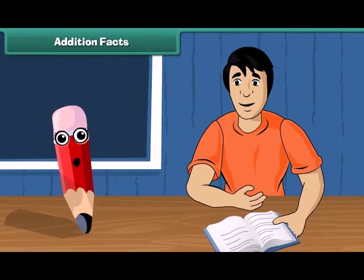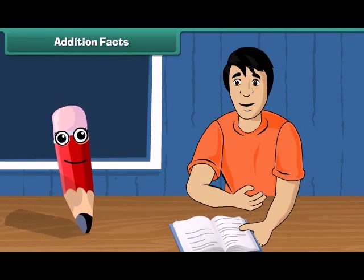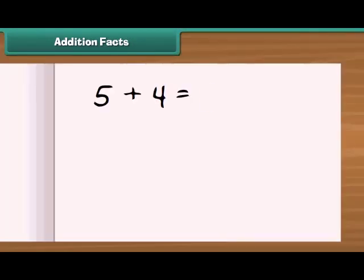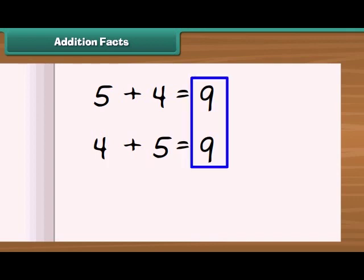Show me your notebook. You know that the sum of 5 and 4 is 9. And if we add 4 to 5, we again get a sum of 9. Whether you add 5 to 4 or 4 to 5, their sum will always be the same. This is known as addition fact.